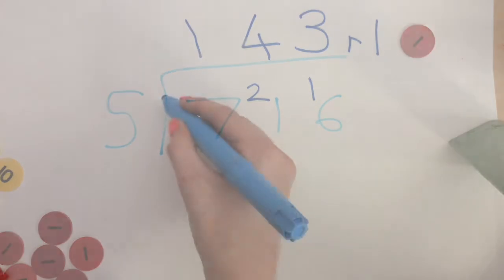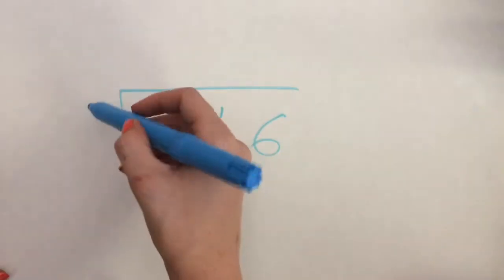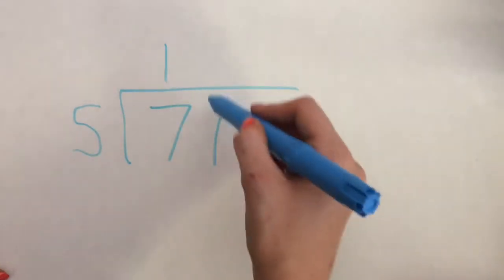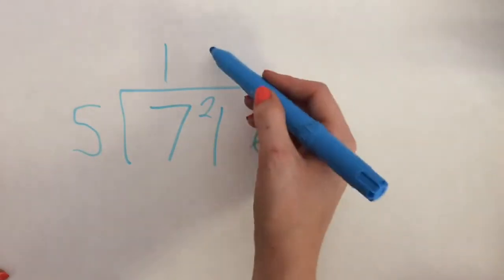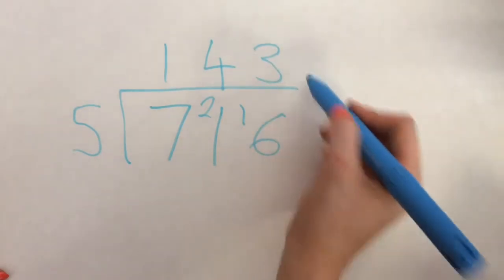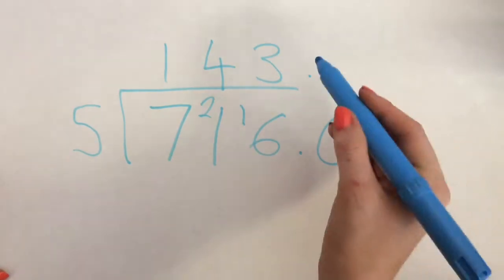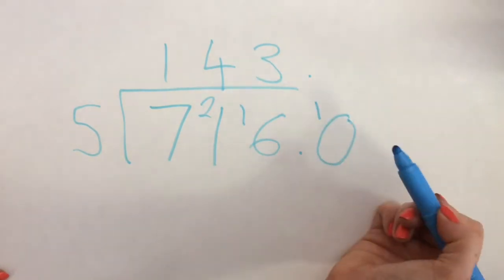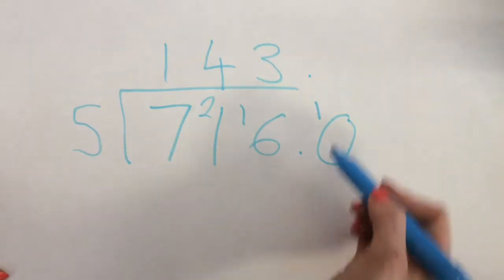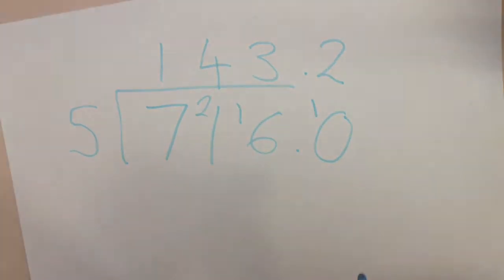Okay, now let's have a look at putting that remainder as a decimal. So I'm going to do the same sum again. I'll do it quite quickly. So one lot of five in seven with two left over, four lots out of 21 with one left over, and three in 16. That remainder one that we saw earlier is now going to be exchanged, and I'm putting that zero in to show where it's going, so I've got 10. Two lots of five in ten. 143.2.